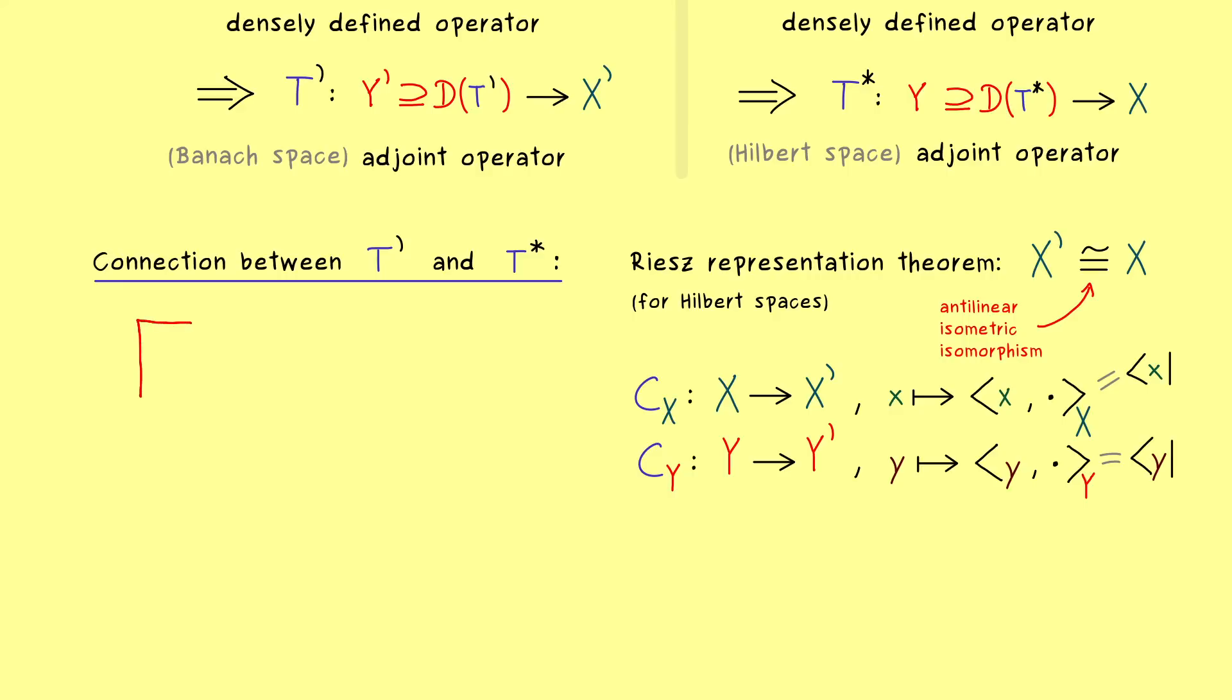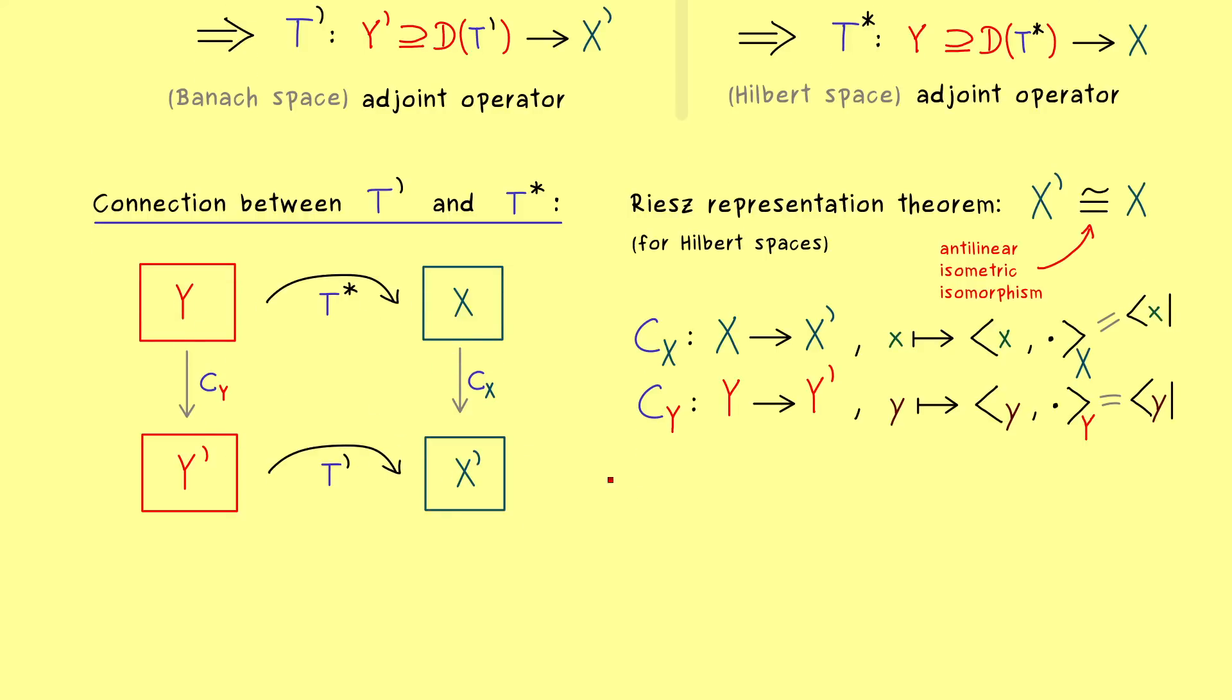So maybe let's make a quick sketch. Here on the left we have our Hilbert space Y, and then T* acts on it, and what we get is something in our Hilbert space X. On the other hand, the corresponding dual spaces we can put to the lower level. And there we know, in between we have just our T' from Y' to X'. So apparently our translation here is quite simple, we just have to apply our C operators, and then we can actually check if we get the same result in both ways.